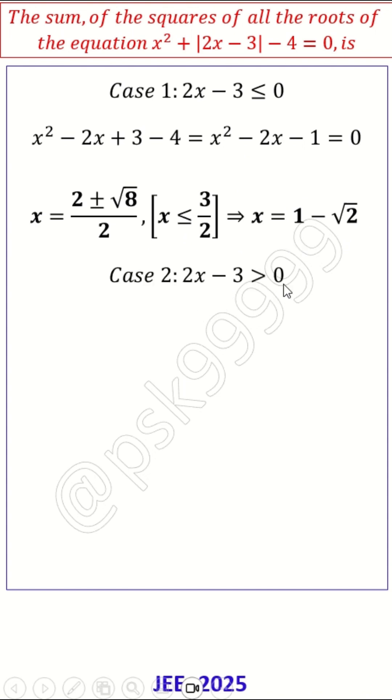Similarly, Case 2: 2x - 3 > 0, or x > 3/2. The quadratic equation you'll get is x² + 2x - 7 = 0, because -3 - 4 = -7.